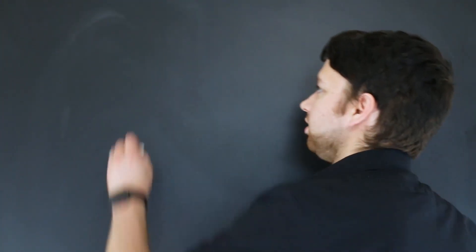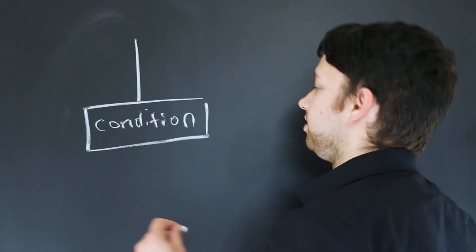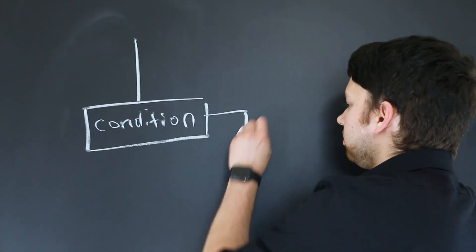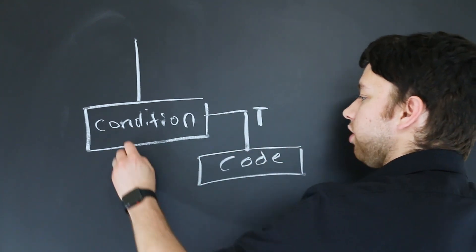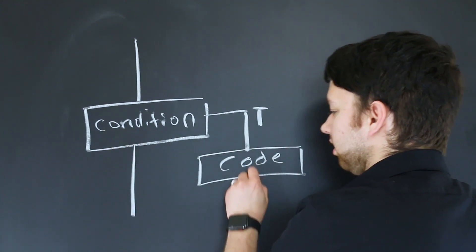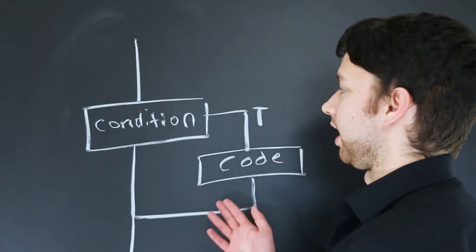To visually see this it might look like this. Here's some condition. And if it passes as true you're going to execute some extra code. If it's false it's just going to continue executing. And eventually this is going to go back onto the same branch.